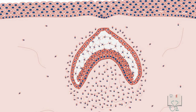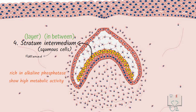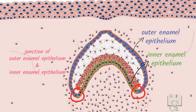A layer of cells forms in between the inner enamel epithelium and stellate reticulum, called the stratum intermedium — literally meaning 'the layer in between.' The cells are squamous in shape. These cells are rich in alkaline phosphatase, show high metabolic activity, and are essential for enamel formation. The junction of outer enamel epithelium and inner enamel epithelium is known as the cervical loop. It is an area of intense mitotic activity as the size of the enamel organ rapidly increases in this direction.